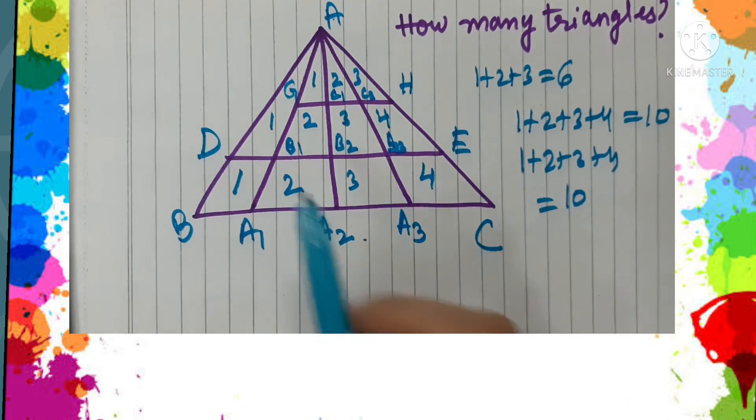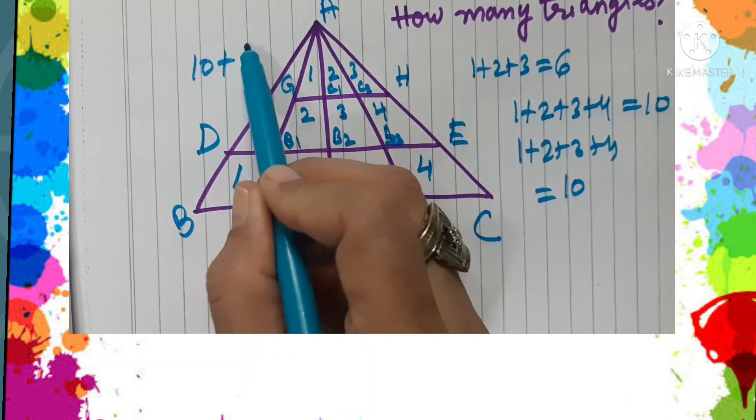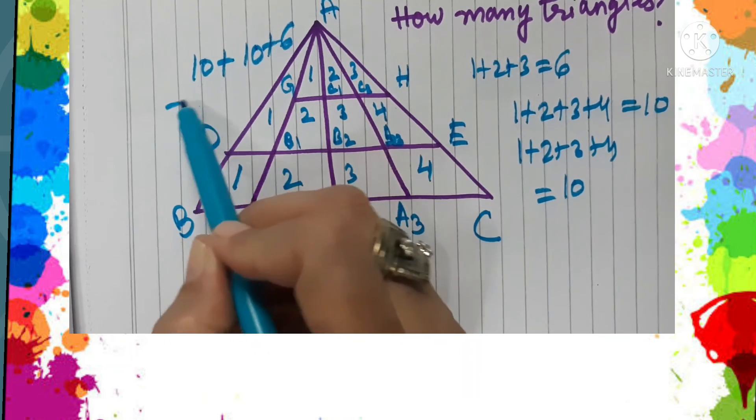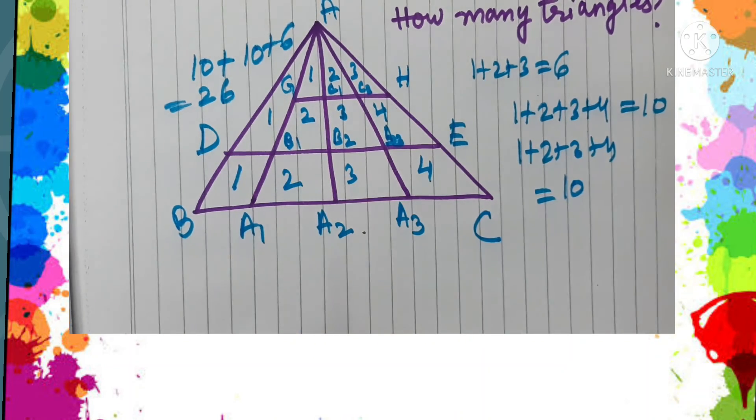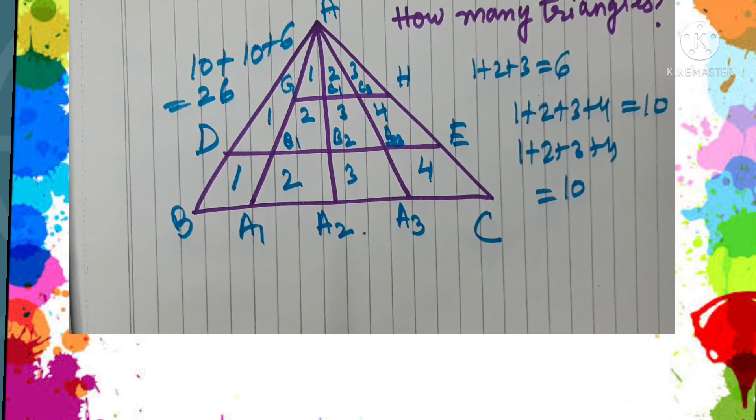So in this figure, the total number of triangles will be 10 plus 10 plus 6, which is 26. Isn't it interesting?